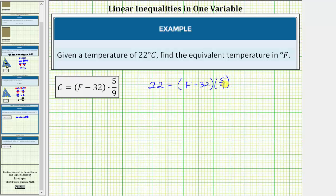Let's begin by clearing this fraction from the right side of the equation by multiplying both sides of the equation by the reciprocal of 5 ninths. And therefore, we'll multiply both sides by 9 fifths. We'll multiply the right side by 9 fifths and we'll multiply the left side by 9 fifths.